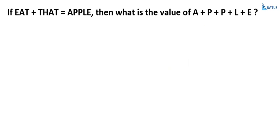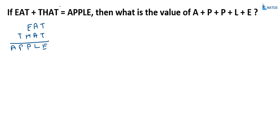Here, EAT plus THAT is equal to APPLE, and the numbers must be 0, 1, 2, 3, 4, 5, 6, 7, 8, and 9. Now, EAT is a three-digit number and THAT is a four-digit number.